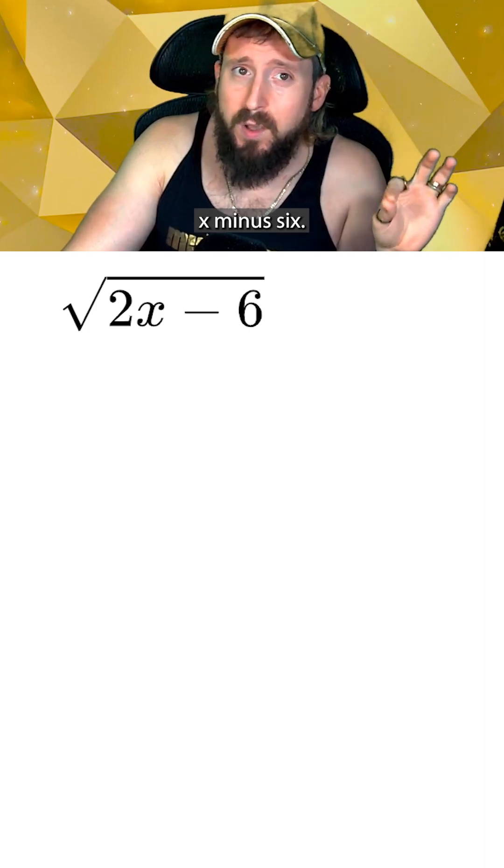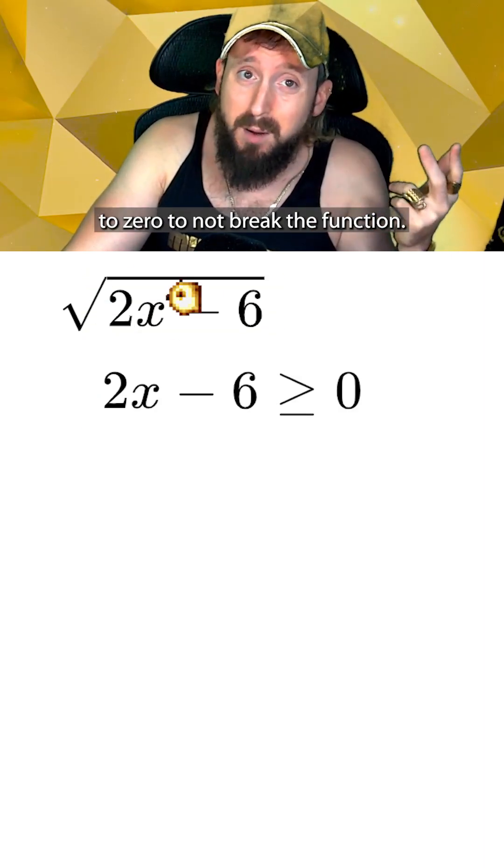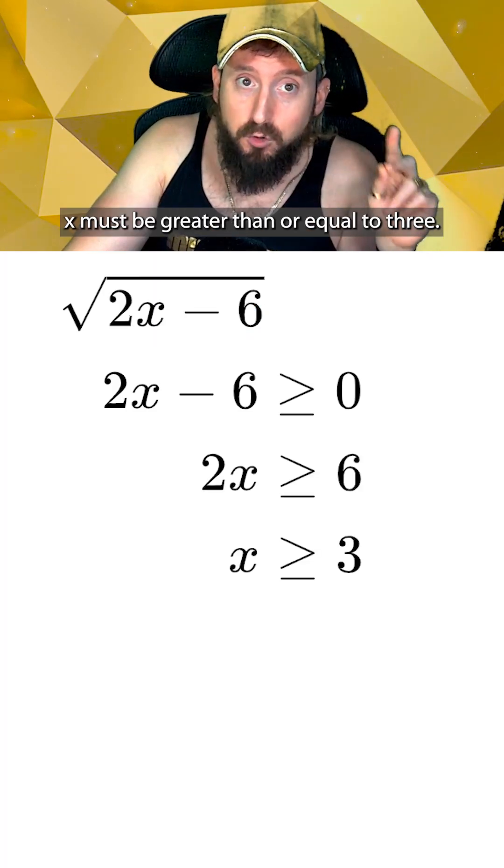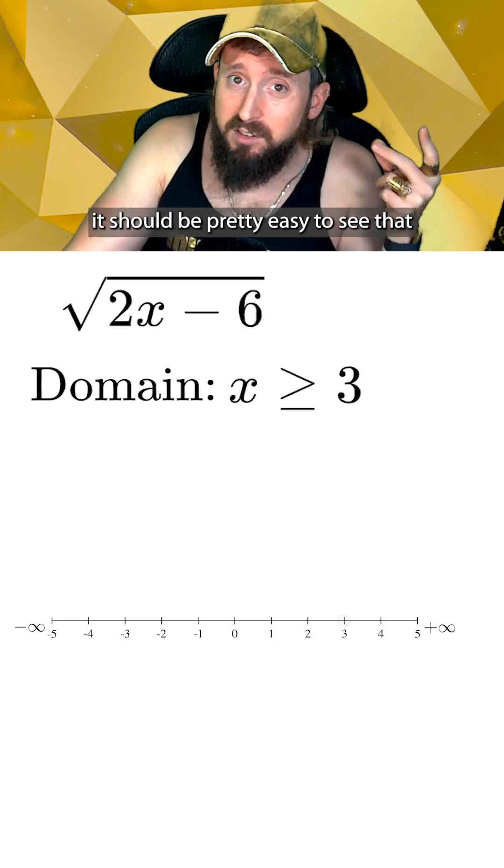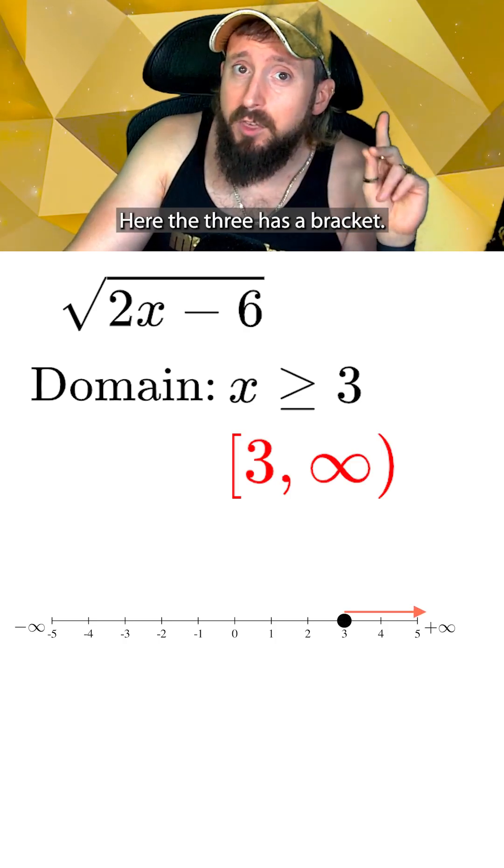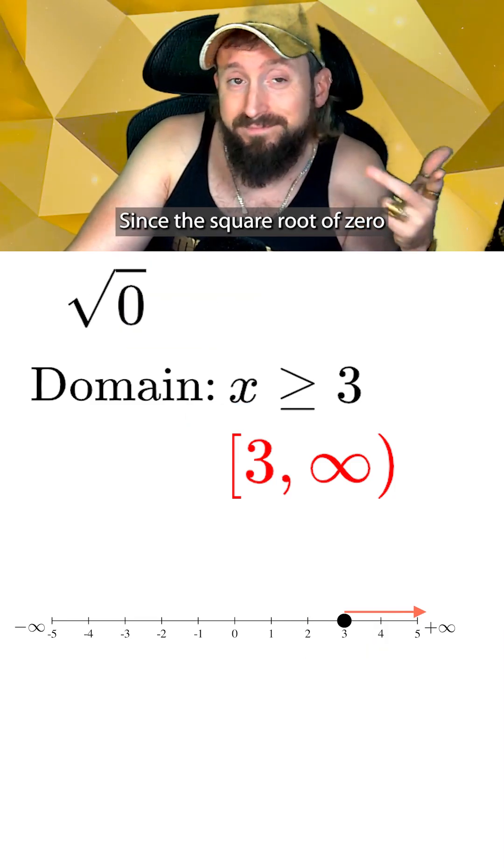In this example, we have the square root of 2x minus 6, so 2x minus 6 must be greater than or equal to zero to not break the function. Doing a little algebra to solve for x, this gets us x must be greater than or equal to 3. Drawing it on a number line, it should be pretty easy to see that the interval notation would be 3 to positive infinity. Here the 3 has a bracket because x is allowed to equal 3 since the square root of zero is just zero.